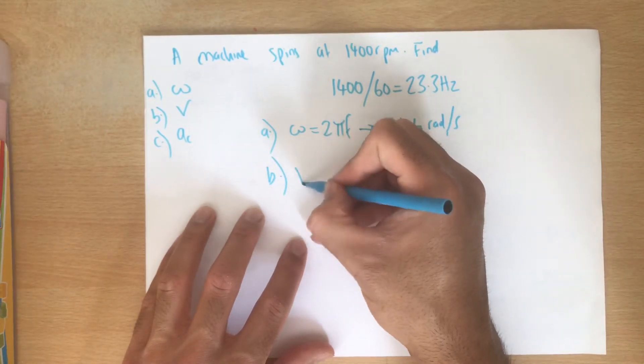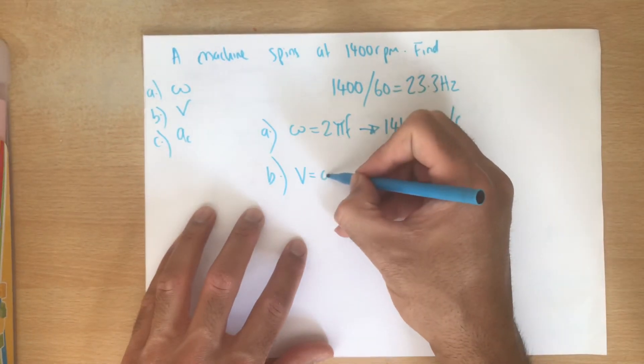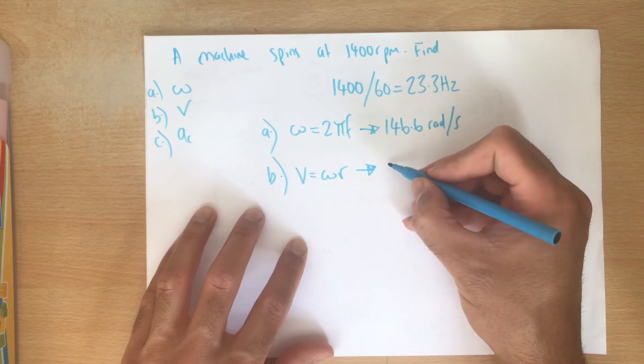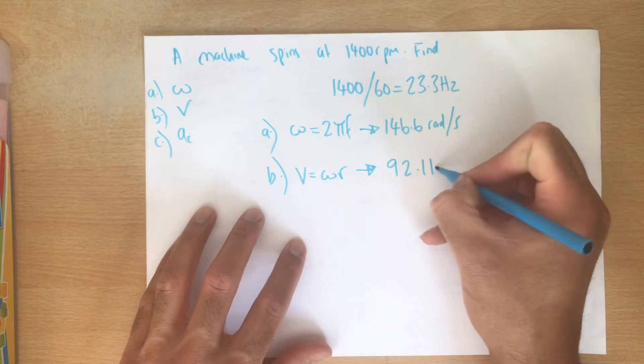For part b we can use v is equal to 2 pi r over t or omega r. So you can use either equation, I'm just going to use the most simple one. And we get an answer of 92.11 meters per second.